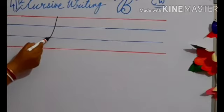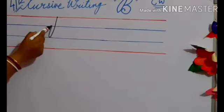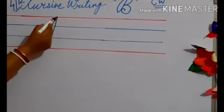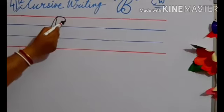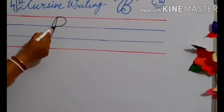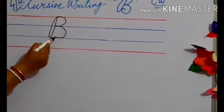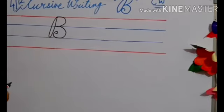Draw a slanting line starting from upper red line till second blue line and fold. Go till upper red line, then one half curve till first blue line, then second half curve till second blue line and again one fold.